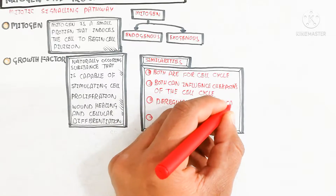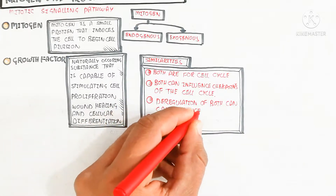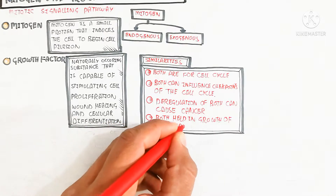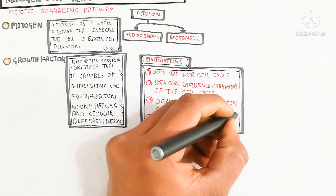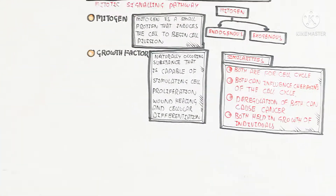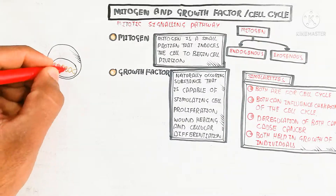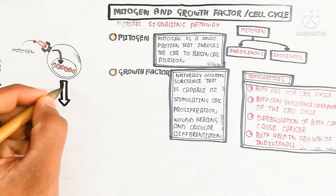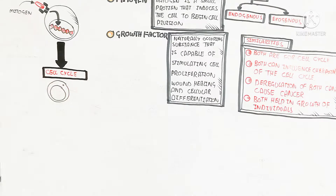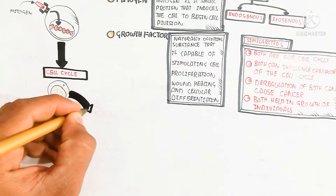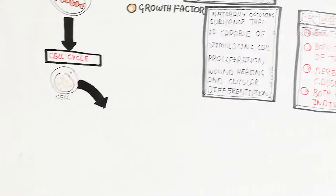Excessive amounts of mitogen and growth factor will lead to cancer. Both help in the growth of individuals throughout life, differentiation, and developmental stages. Here I am drawing a cell where the mitogen binds with the mitogen receptor, which stimulates the DNA to proliferate, differentiate, and in this way the cell cycle begins. The interphase is the interface.